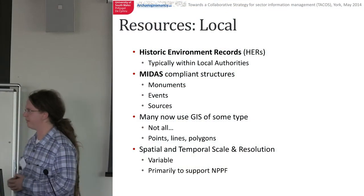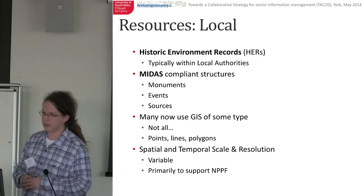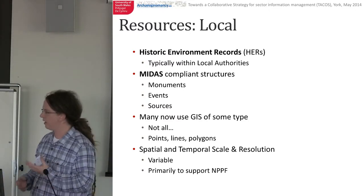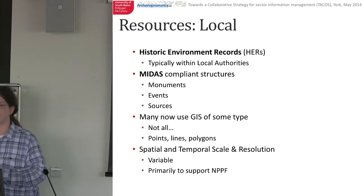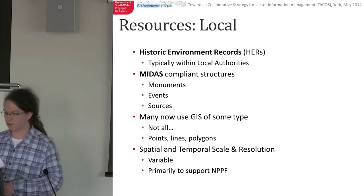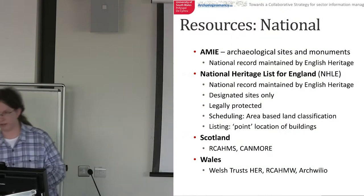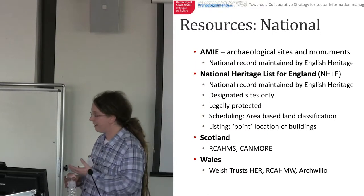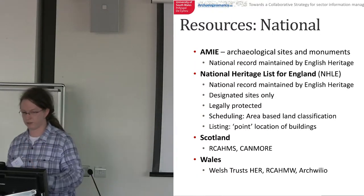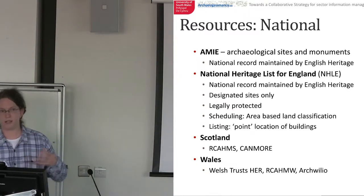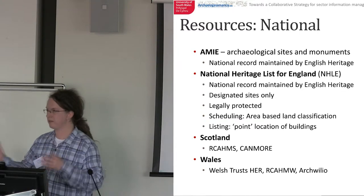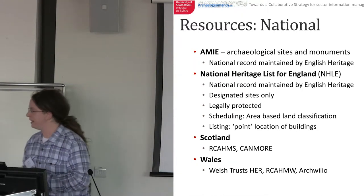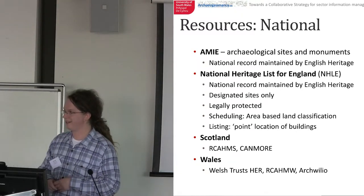What resources have we got out there as a historic environment sector? We have local resources — the HERs, many of which are using GIS, and they work in many and varied different ways. We also have national resources: we have AHI, the Archaeological Heritage Inventory maintained by Historic England; the National Heritage List for England, which is the statutory stuff — scheduling, listing, all that — which also has a legal element. And comparable resources in Scotland and Wales. I'm going to focus largely on England today, but I'll come back to Scotland at the end.